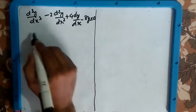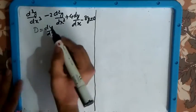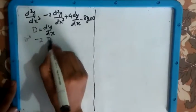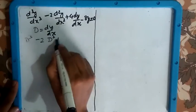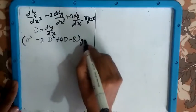First we will convert into the D form where D is nothing but dy/dx. You can write this one as (D³ - 2D² + 4D - 8)y = 0.